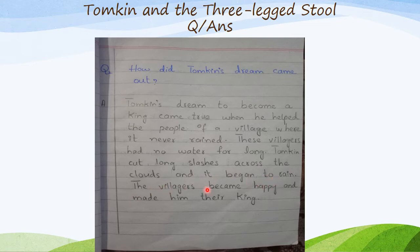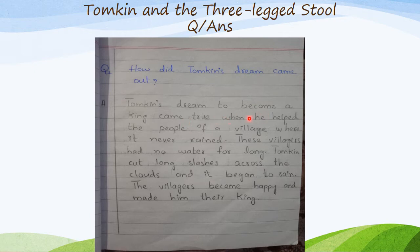The villagers became happy and made him their king. I will read again for you. Question number two: How did Tomkin's dream come true? Answer: Tomkin's dream to become a king came true when he helped the people of a village.